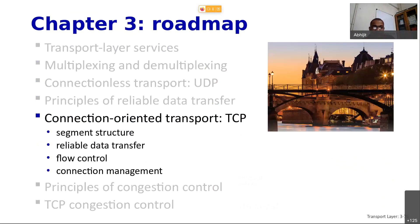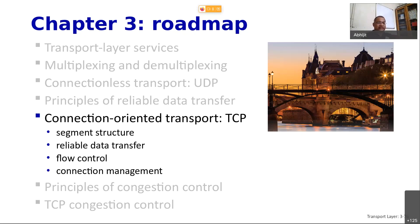We are now done with reliable data transfer and pipelining — Go-Back-N and Selective Repeat. In practice, TCP doesn't use either of them directly; it uses an interesting mix of both, which we will study next. It was necessary to understand the principles of RDT 1.0 through 3.0 and Go-Back-N and Selective Repeat before tackling how TCP actually works.